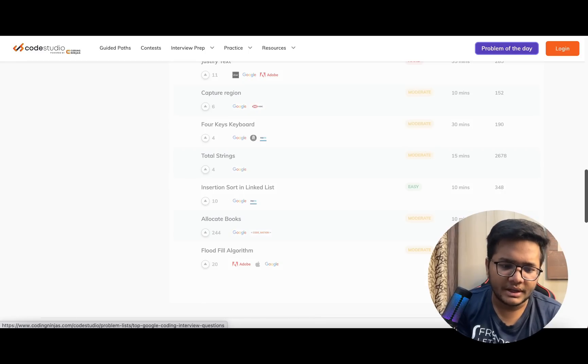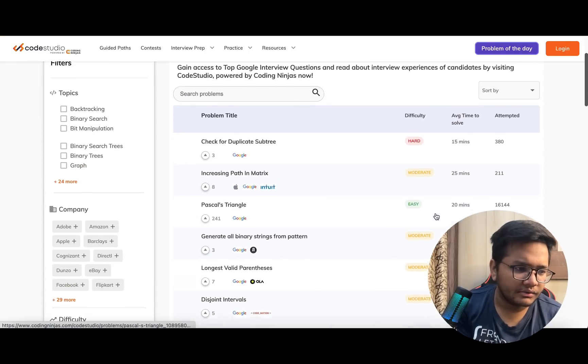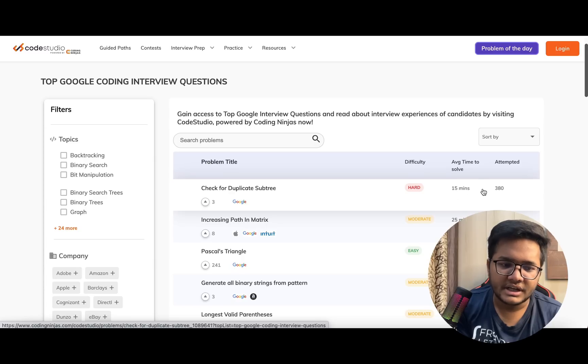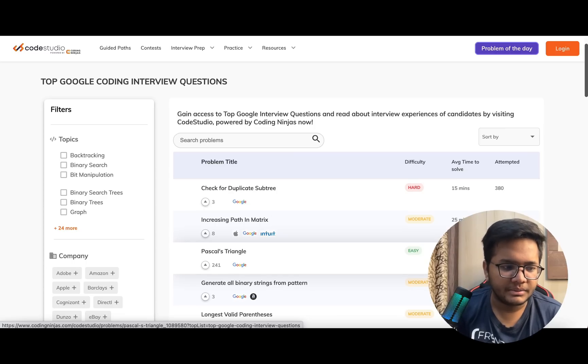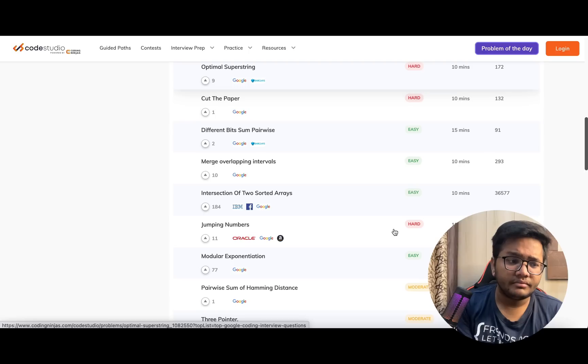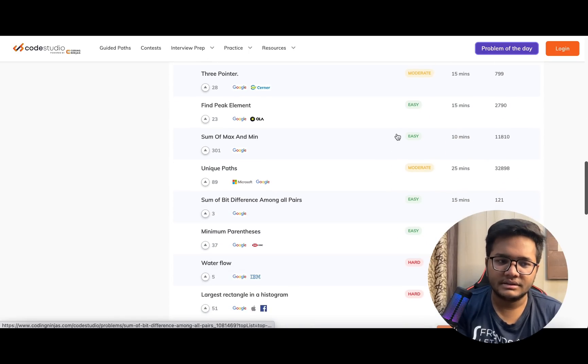You can practice these questions well. There are around 100 questions. They've also mentioned average time needed to solve each problem, difficulty level, and how many students have attempted it. Pascal's Triangle is a very common question many students have attempted.